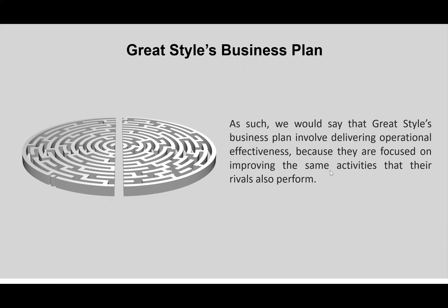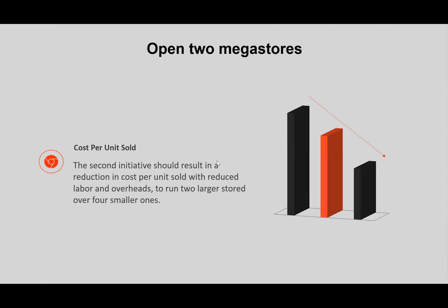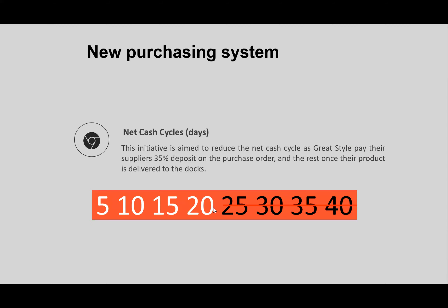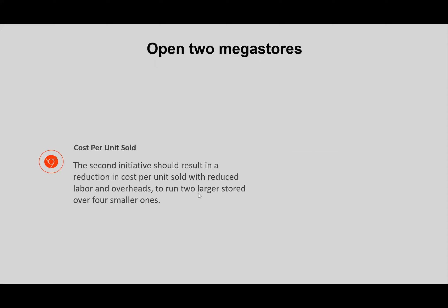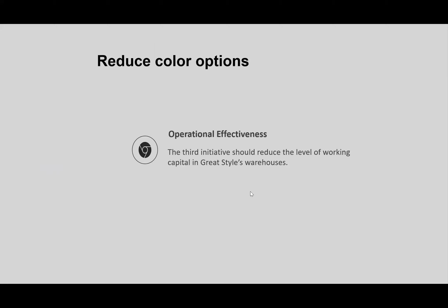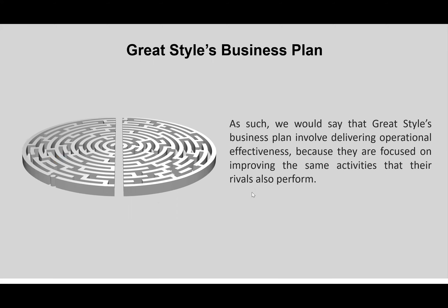Because they are focused on improving the same activities that their rivals also perform, they are similar to their competitors. So what do we say about this strategy? This is basically not a strategy formulation — it is operational effectiveness. They are focused on improving the same activities that their rivals perform. This is the first step of the process, and we will be able to implement this operational effectiveness.